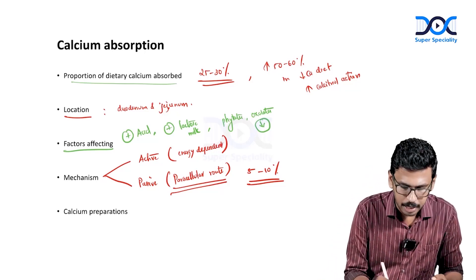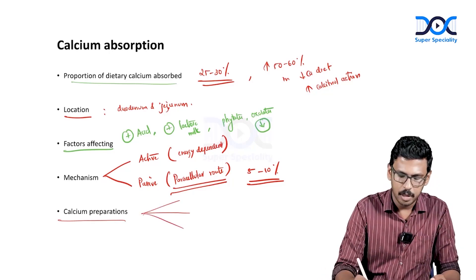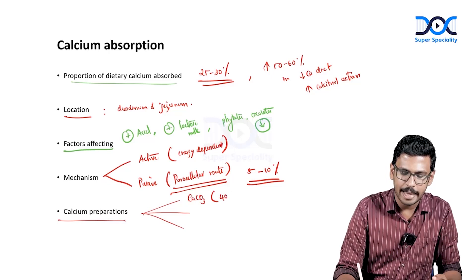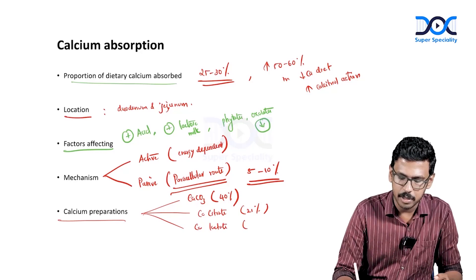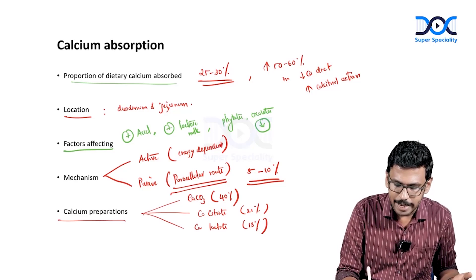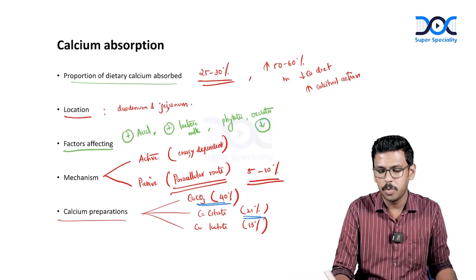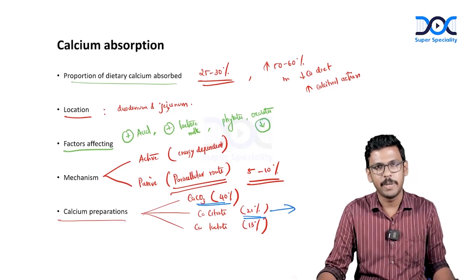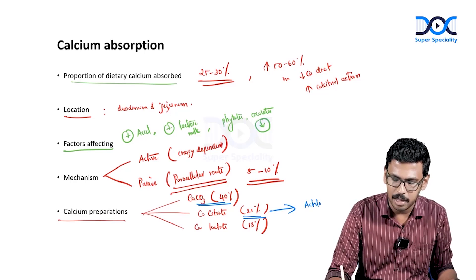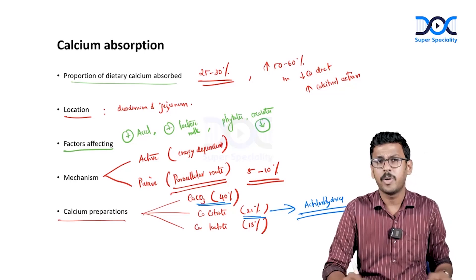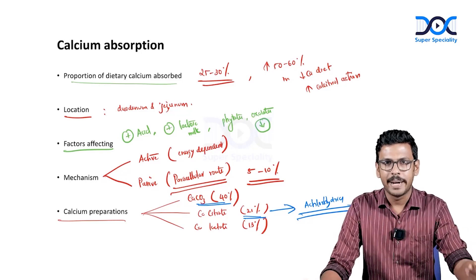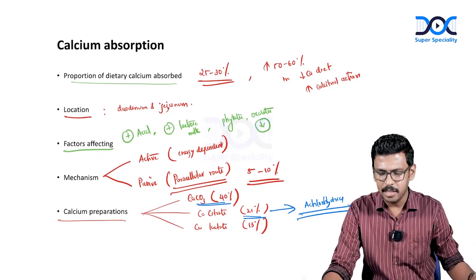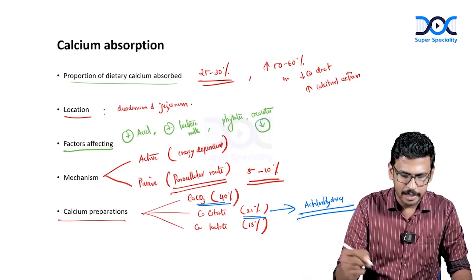Regarding calcium preparations: calcium carbonate has the highest proportion of elemental calcium at approximately 40%, followed by calcium citrate at 21%, calcium lactate at 13%, and calcium gluconate at 9%. Calcium citrate is especially useful in patients with achlorhydria or peptic ulcer disease, or those on long-term PPIs, as it requires minimal acid support for absorption. The answer to question three is that TRPV5 is responsible for active calcium transport in intestine — this is false; it is TRPV6. TRPV5 is in the DCT of the kidney.